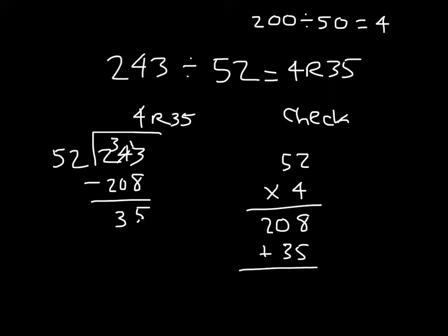Add back in the remainder. 8 plus 5 is 13, 3, regroup the 1. 1 plus 0 plus 3 is 4, and that's 2. And so it does check. So 243 divided by 52 is equal to 4 with a remainder of 35.